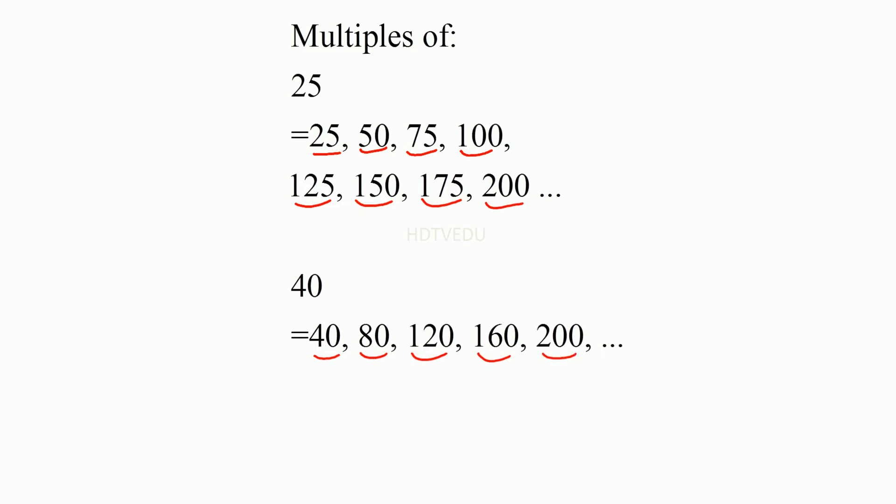So what is the number that is common to both multiples of 25 and multiples of 40? It is actually 200. The least common multiple between 25 and 40 is 200.